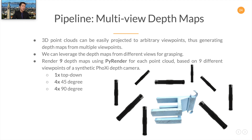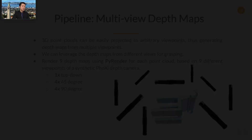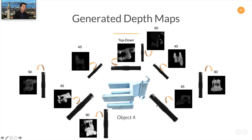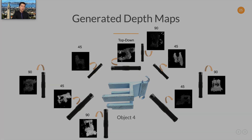We project based on nine predefined different viewpoints of a synthetic Foxy camera, which is specified by the camera intrinsic matrix. Among the nine depth maps, we have one top-down view, four 45-degree views, and four 90-degree views. Here we show some generated depth maps. We place synthetic depth cameras around the object and render depth maps based on the nine predefined viewpoints.